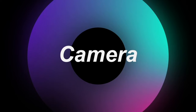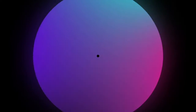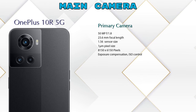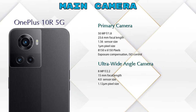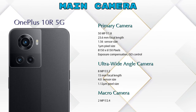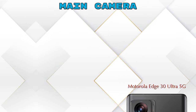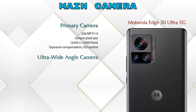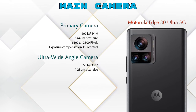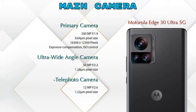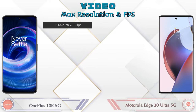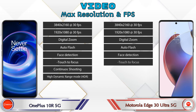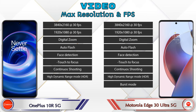Now let's talk about cameras. For the rear camera, the 10R 5G has three cameras: a primary camera, an ultra-wide angle camera, and a macro camera. The 30 Ultra 5G also has three rear cameras: a primary camera, an ultra-wide angle camera, and a telephoto camera. For video, the 10R 5G supports 8 different video features and the 30 Ultra 5G supports 9.